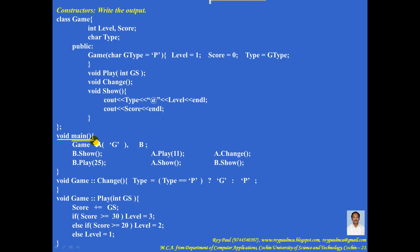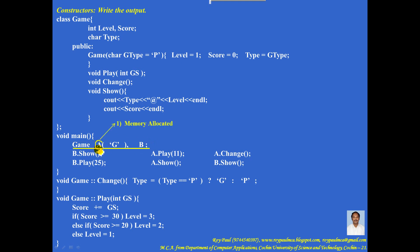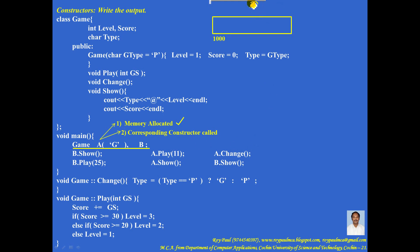Control comes to the main function. Game is a class; A and B are objects of the class. When an object is encountered, two things are to be done: one, memory should be allocated for the object, and after that the corresponding constructor should be called. So first, let me allocate memory for A. Memory is allocated with a name, content area, and some address.